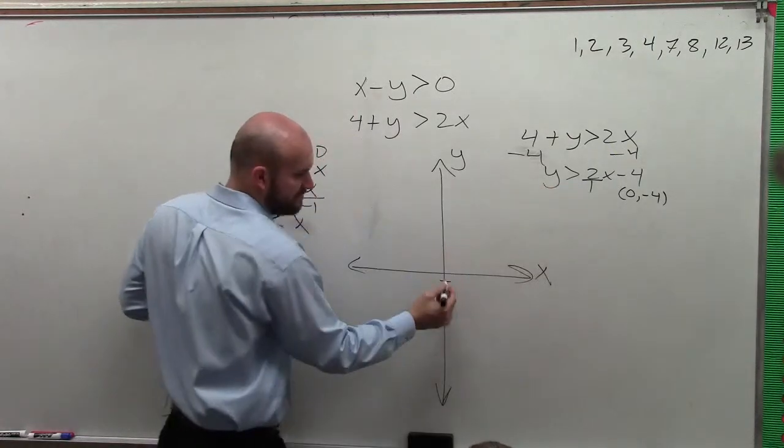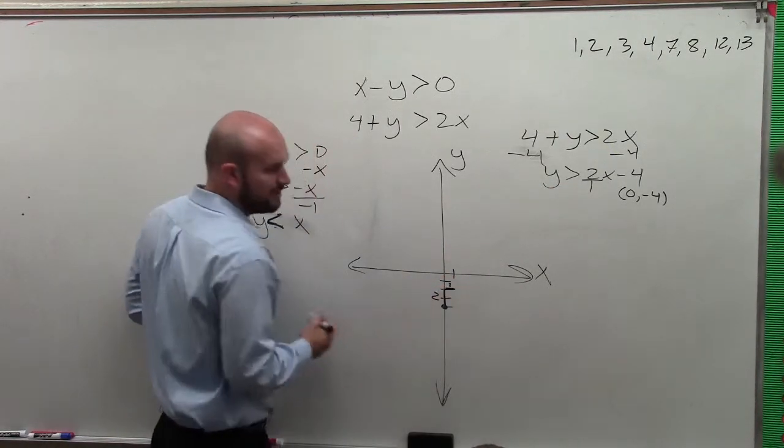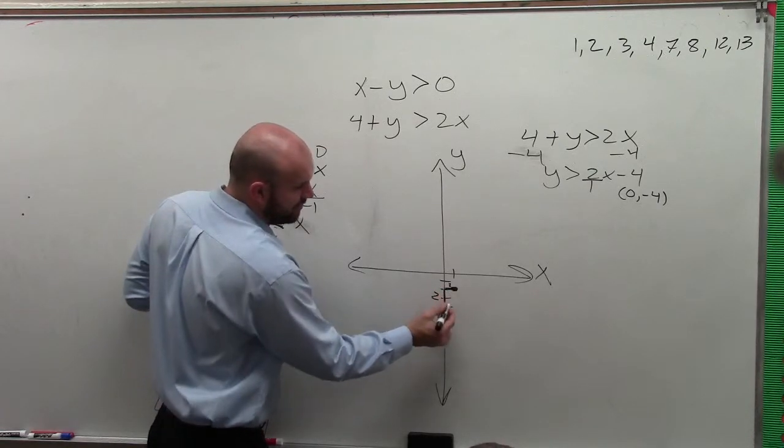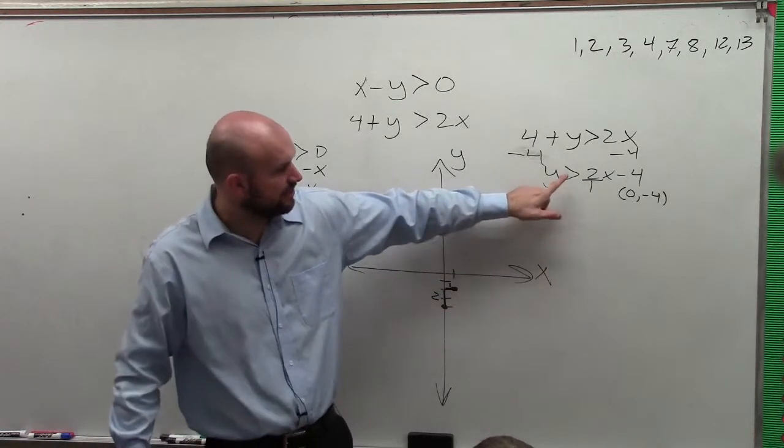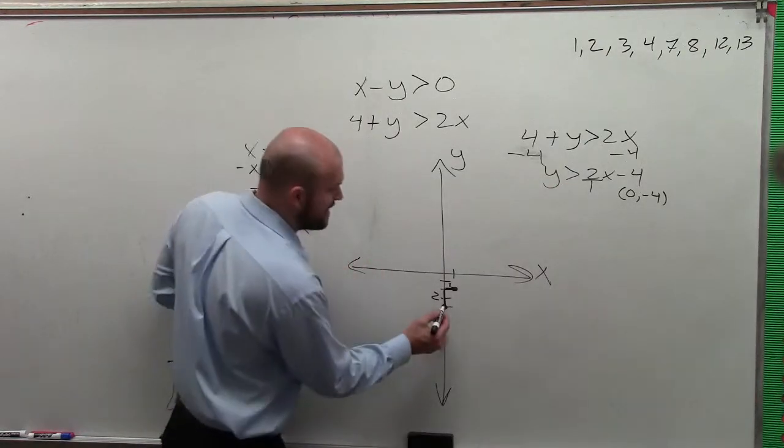If the change in the x-coordinates is positive 1, I'm going to go over 1 unit. Does everybody see how that slope is kind of factored in? Now, I plot the point, and I connect. But before I connect, I want to look at my inequality symbol. That is telling me that is a greater than, not greater than or equal to. So it's a dashed line.